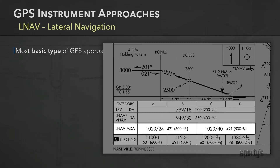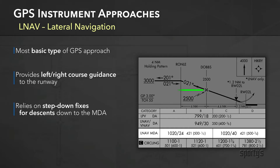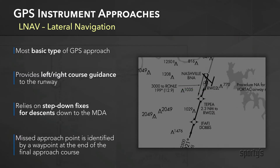LNAV is the most basic type of approach and provides left-right course guidance to the runway, relying on step-down fixes for descents down to the MDA. The missed approach point is identified by a waypoint at the end of the final approach course.